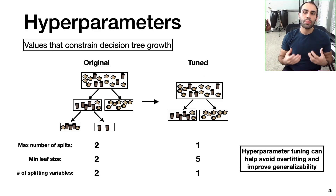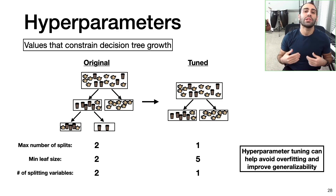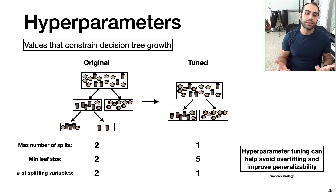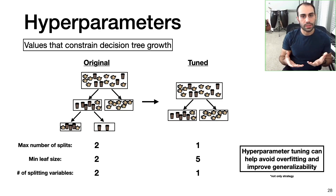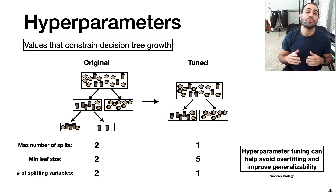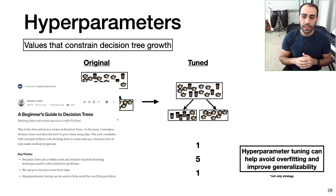The key point is hyperparameter tuning can help avoid the overfitting problem and improve your decision tree's generalizability — its ability to perform well on new data. Although this is a widely used way to develop decision trees, it is not the only way. I talk more about alternative strategies in the blog associated with this video, so be sure to check that out.